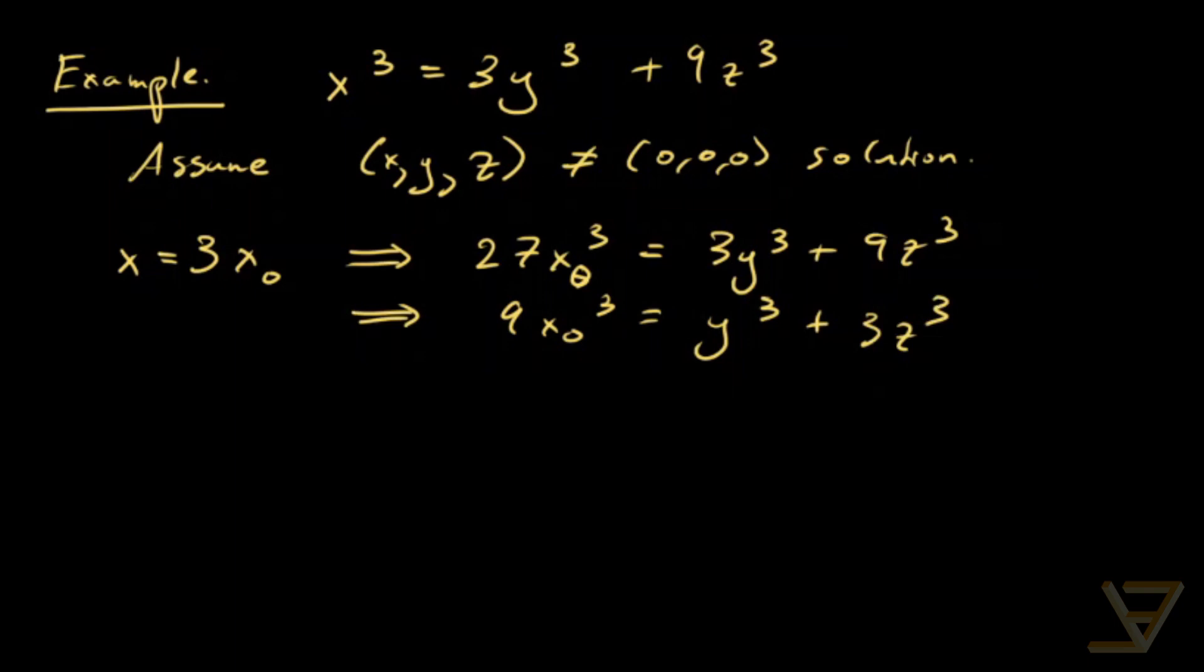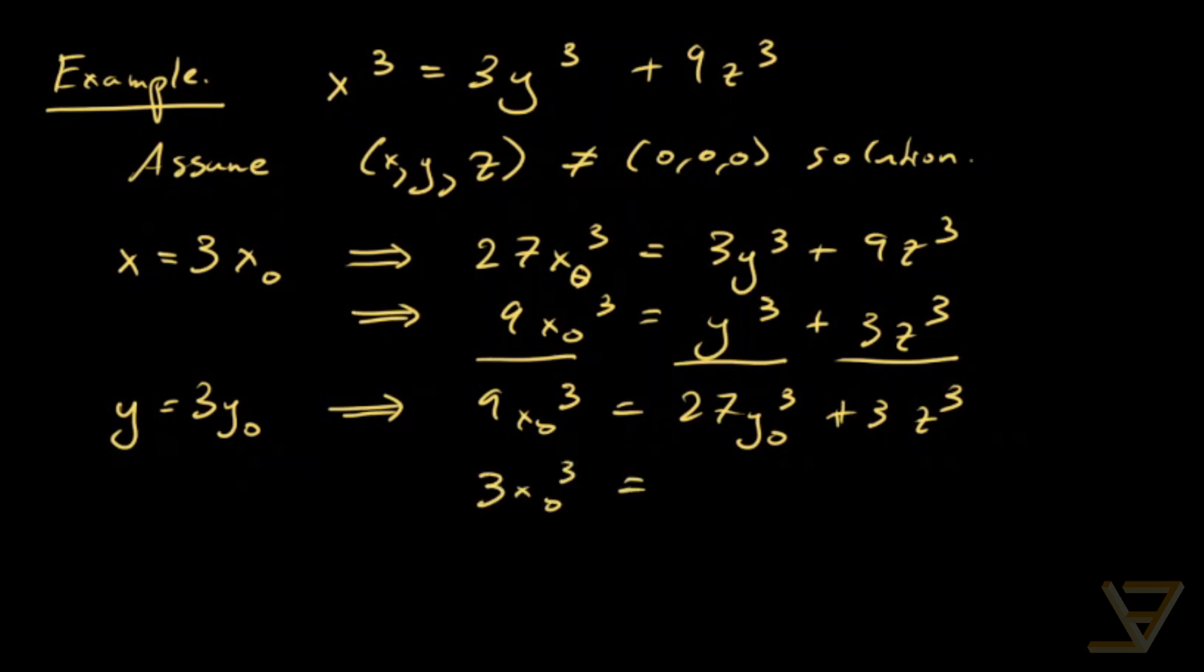Now we can tell that 3 divides this and this. So 3 also has to divide y. So y is equal to 3y_0, which implies that 9x_0 cubed is equal to 27y_0 cubed plus 3z cubed. And we can divide by 3 again to get 3x_0 cubed is equal to 9y_0 cubed plus z cubed.